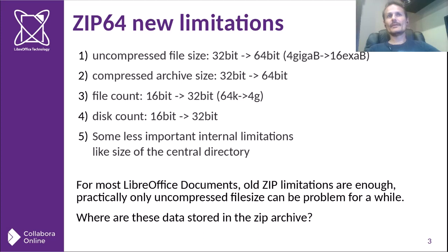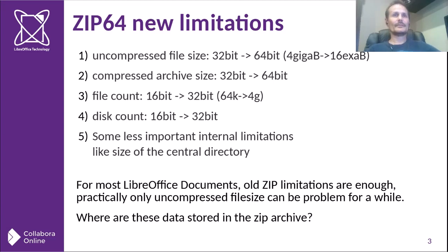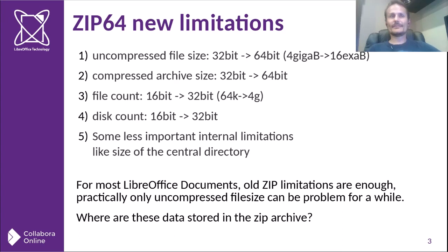The compressed archive size would mean we'd need to reach an uncompressed size of around 40GB. It also extended the file count. It's not really important for us because the previous limit was 64,000 files at max. If someone inserts a hundred thousand small images, for example, then it could be a problem, but it's very extreme. If someone tries to do that, they can put a bug ticket in Bugzilla, but I've never seen a file that would even come close to that point.